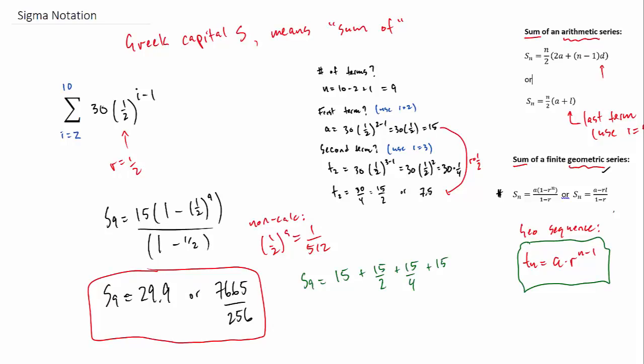And again, if we list out what we're really doing, we're going 15 plus 15 over 2 plus 15 over 4, because we're always multiplying by a half to get the next term. We're doing that for 9 terms. If you add all those numbers up, they'll equal approximately 29.9.